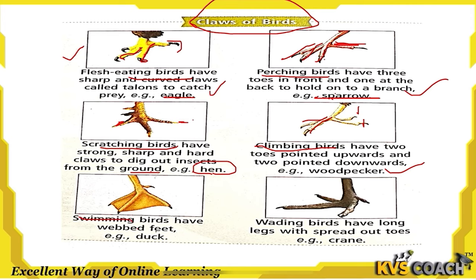Wading birds have long legs with spread-out toes, like the crane, so they can wade through water.